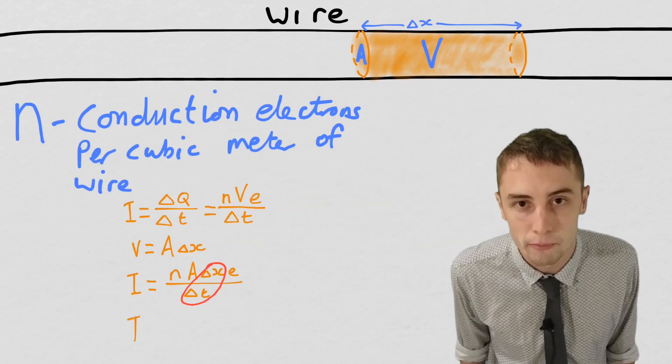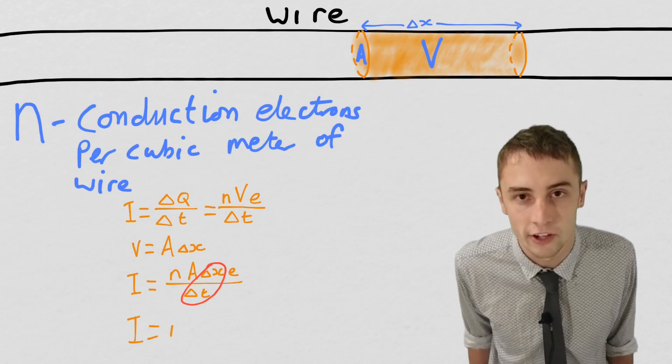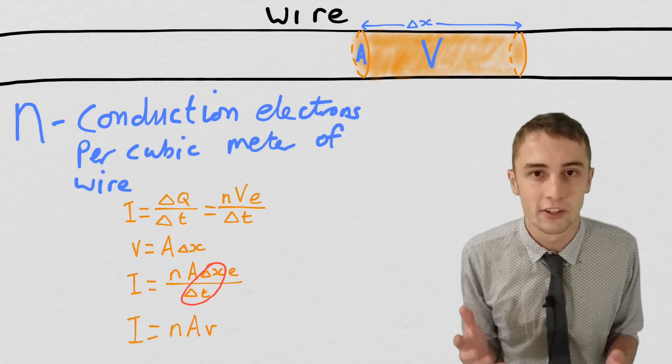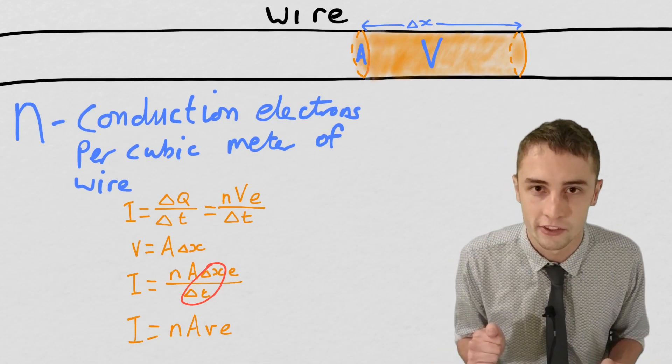Delta x is our change in position. Delta t is our change in time. Change in position divided by change in time is velocity. Okay, so we're just going to replace that with velocity.